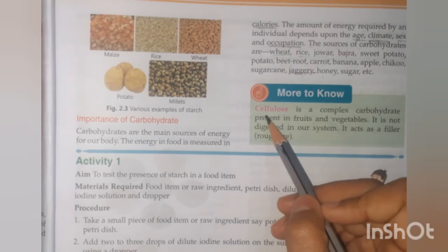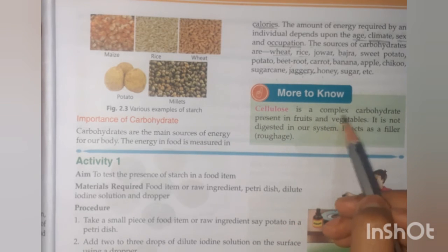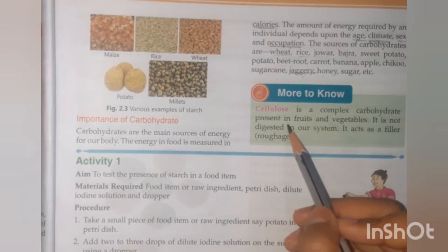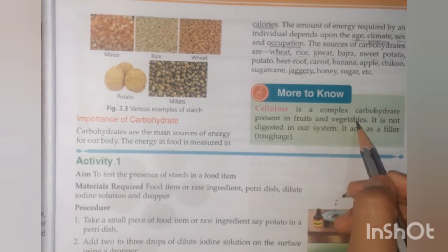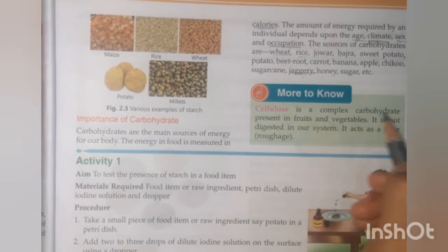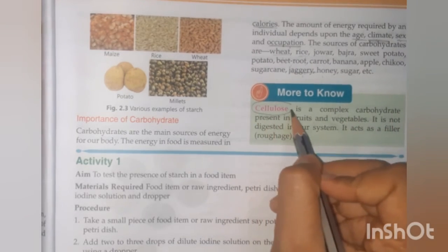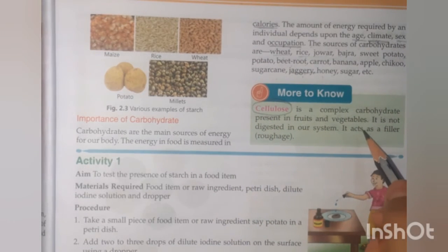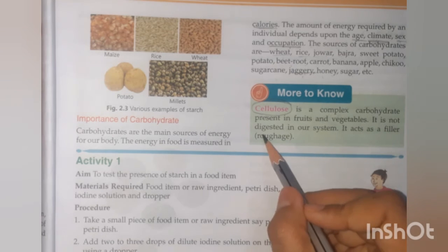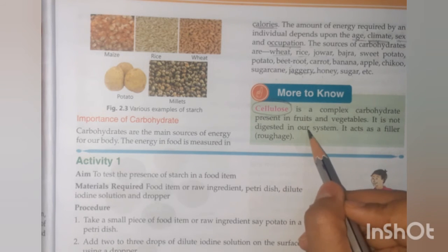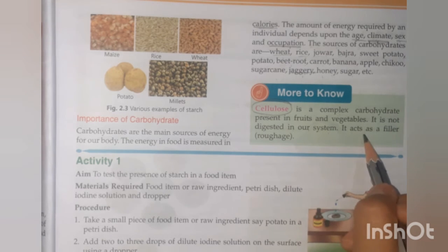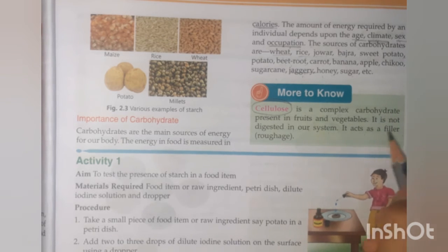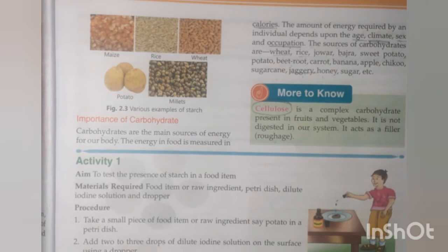More to know: cellulose is a complex carbohydrate present in fruits and vegetables. It is not digested in our digestive system. It acts as roughage, functioning as a filler in our digestive system.